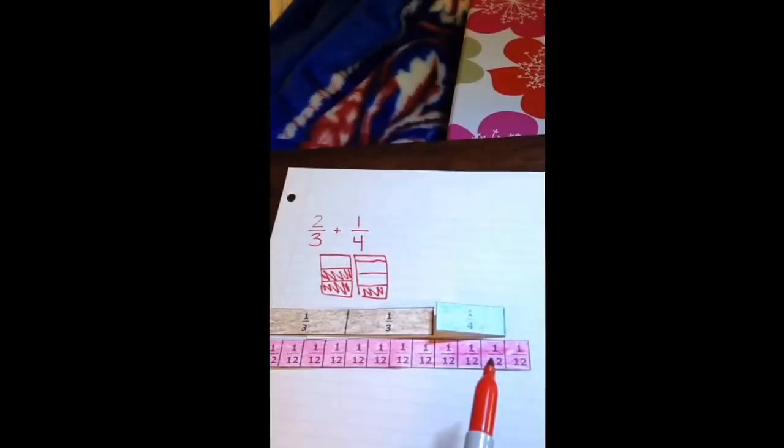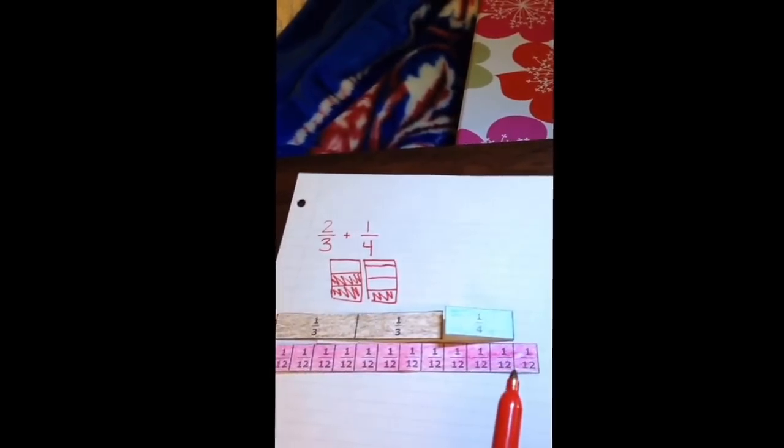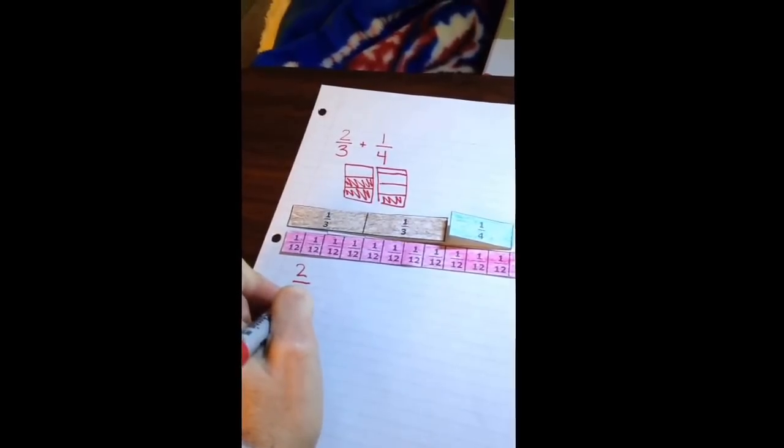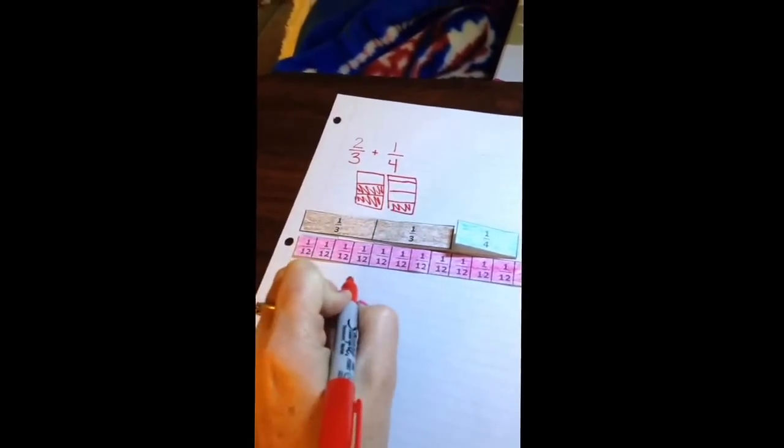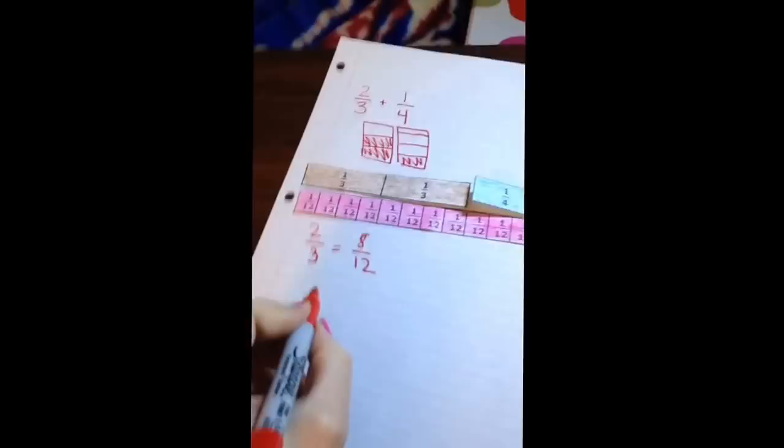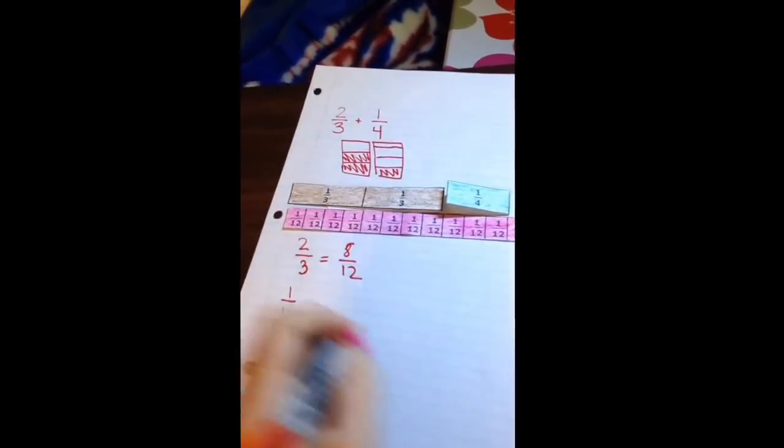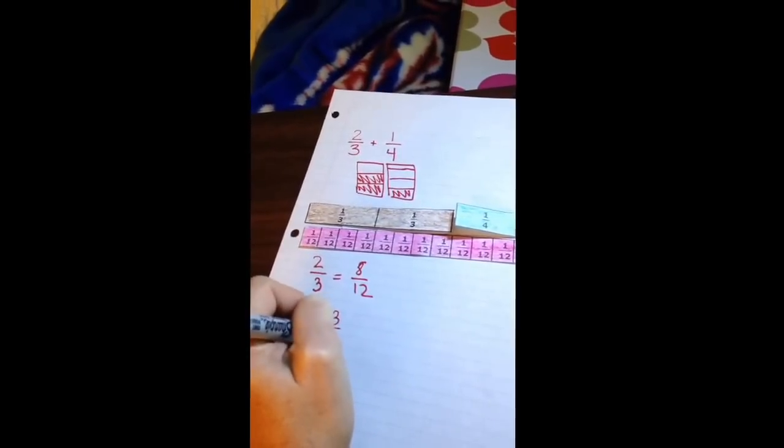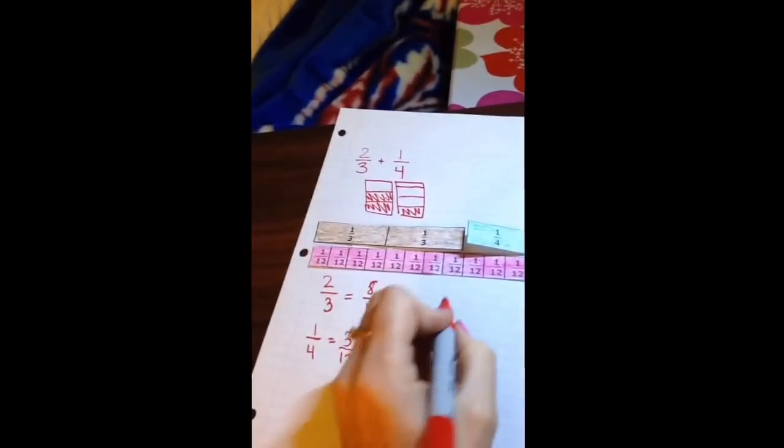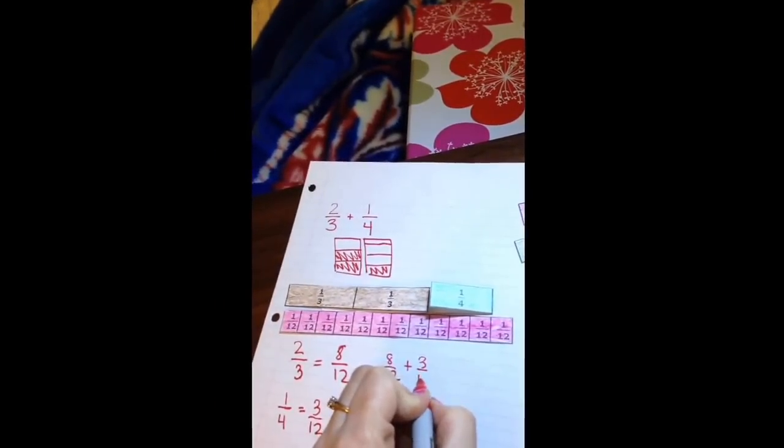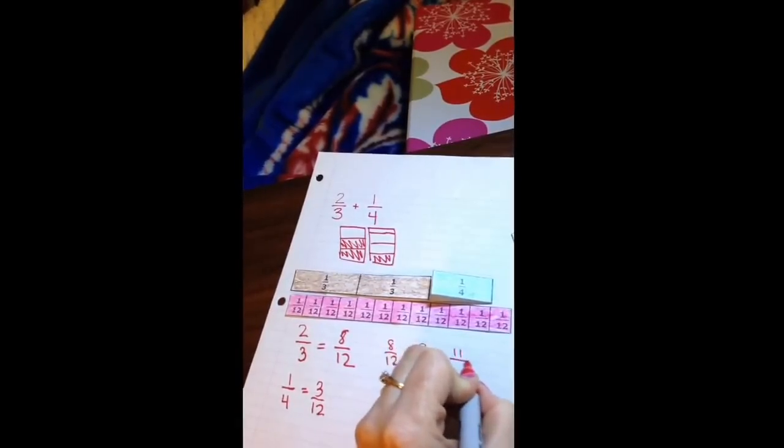and I have one, two, three twelfths that represents one fourth. So I can write my equivalent fractions. It's going to be two thirds. The equivalent fraction for two thirds is eight twelfths. And the equivalent fraction for one fourth equals three twelfths. And then I can just add eight twelfths plus three twelfths equals eleven twelfths.